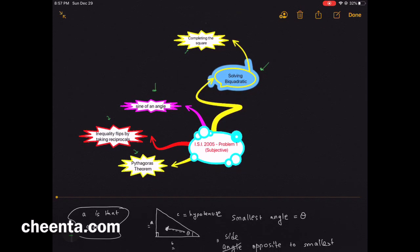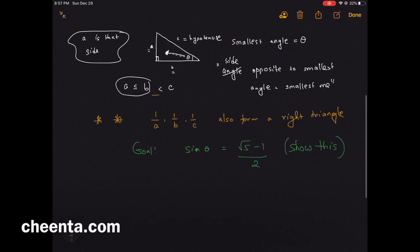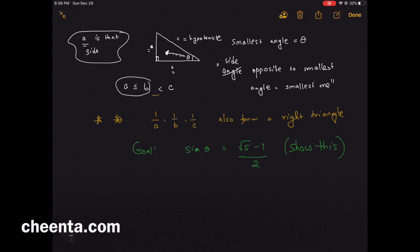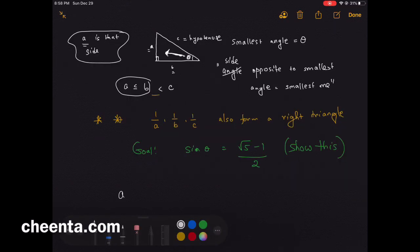So we have assumed that a is the smallest side, opposite to the smallest angle theta. We also know that a² + b² = c², since this is a right triangle.